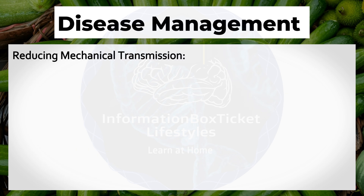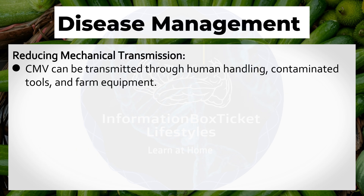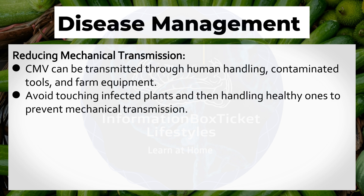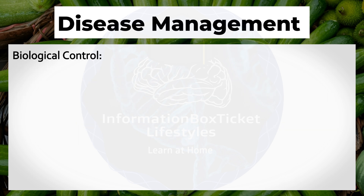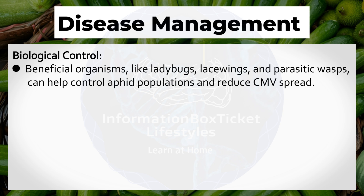Reducing Mechanical Transmission: CMV can be transmitted through human handling, contaminated tools, and farm equipment. Avoid touching infected plants and then handling healthy ones to prevent mechanical transmission. Disinfect pruning tools and wash hands after working with plants to prevent accidental virus spread. Biological Control: Beneficial organisms like ladybugs, lacewings, and parasitic wasps can help control aphid populations and reduce CMV spread.